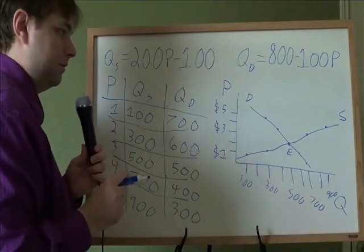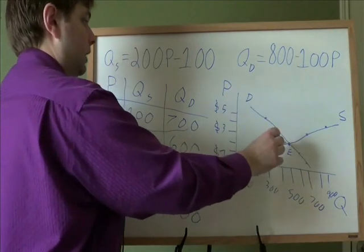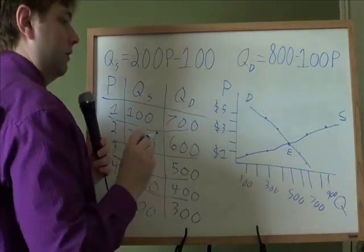And one thing that you can use to help you remember your economics graphs is that it goes in alphabetical order. Demand D, equilibrium E, and then supply S. And they will always go in that order left to right.